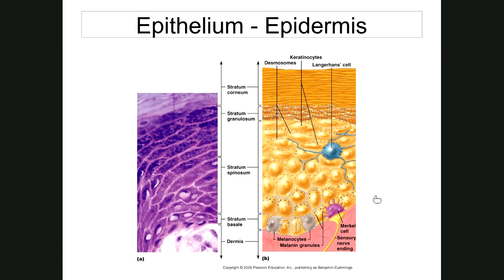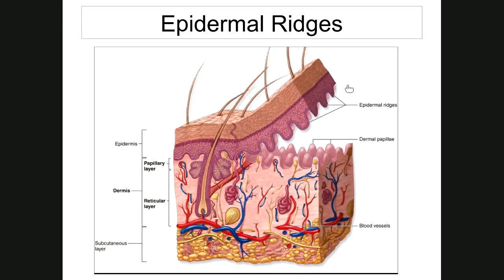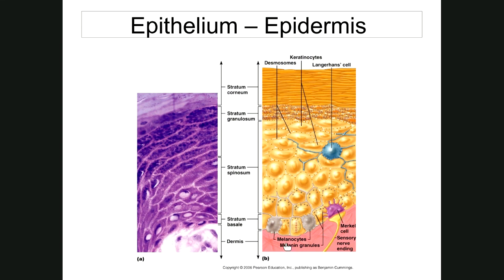These cuboidal to columnar cells form folds called epidermal ridges. You can see the stratum basale here — it's a dark layer going up and down in a wiggly pattern called epidermal ridges, or fingerprints. This folding extends down into the underlying dermis as dermal papillae — 'papilla' means projection. These are projections from the dermis below the epidermis. This layer also contains melanocytes — cells that produce melanin, the pigment for your skin.